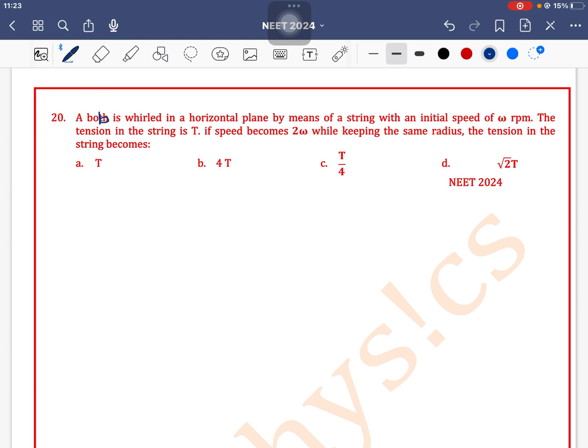A bob is whirled in a vertical plane by means of a string with an initial speed of omega. The tension in the string is T. If speed becomes 2 omega while keeping the same radius, the tension in the string becomes...